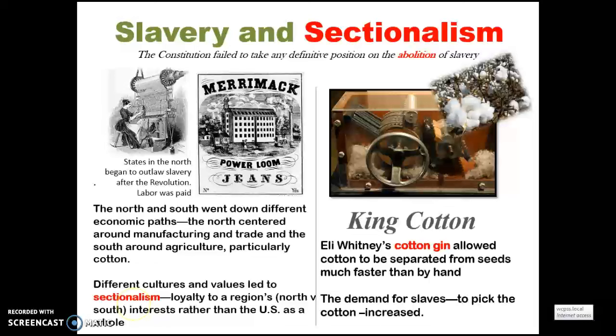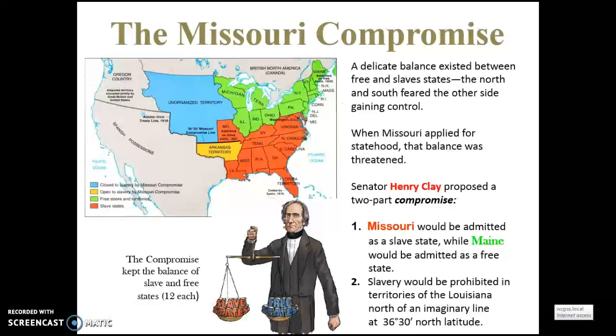Cotton would be called King Cotton. Eli Whitney's cotton gin allowed cotton to be grown in other states and separated from seeds much faster than by hand. This increased the demand for slaves to pick the cotton, and demand for cotton increased because it could now be produced at a faster rate, leading to several compromises. The cotton gin meant cotton could be grown in any state, not just southern states.